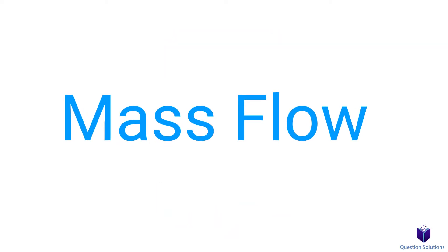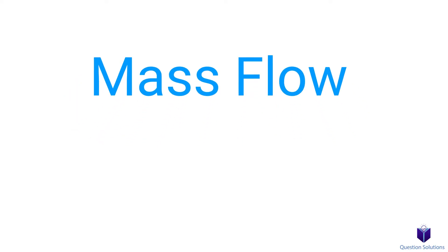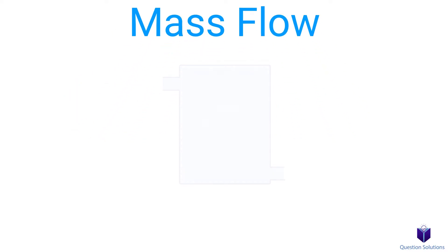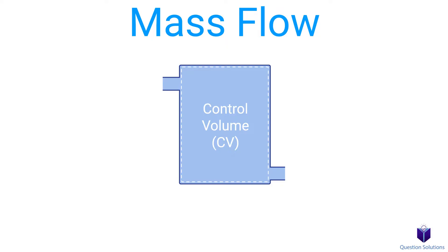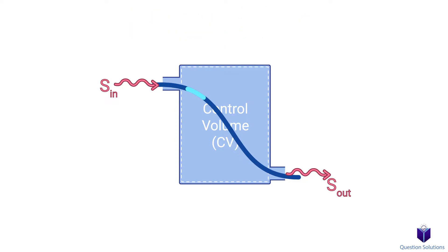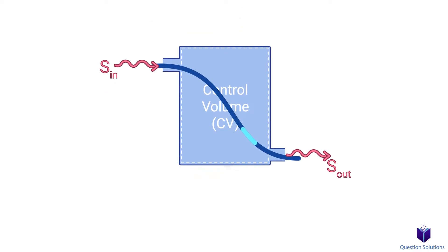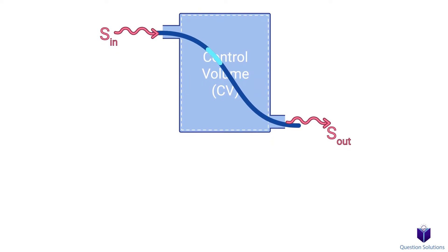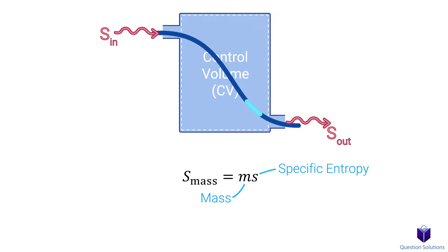Now on to the second method of entropy transfer, which is mass flow. If we have a system where mass can cross into and out of the system, then that brings along entropy. If the mass of a system doubles, then the entropy of the system also doubles. We can figure out entropy transfer by mass flow using this equation, where m is mass and s is specific entropy — entropy per unit mass. This can also be written in rate form.